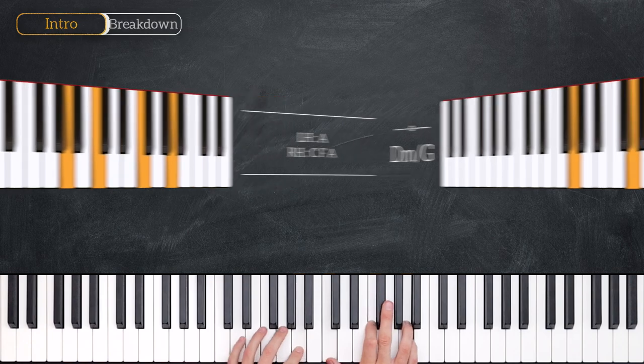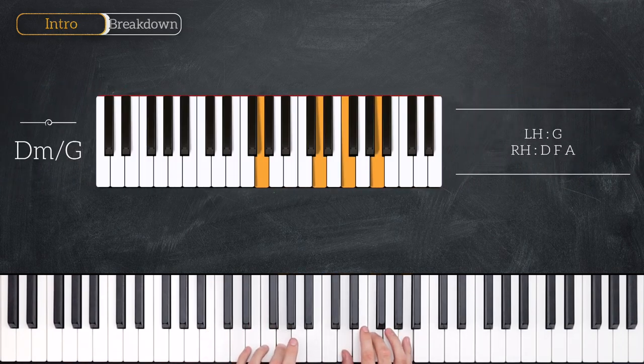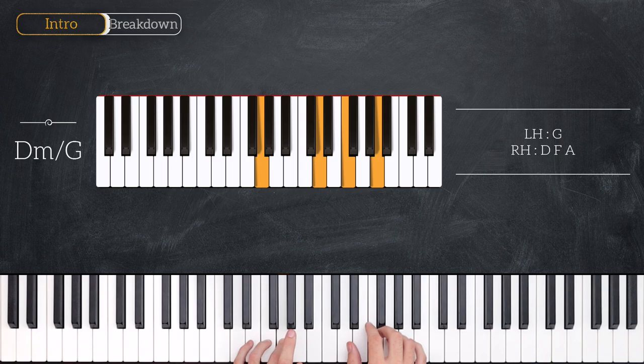The final two chords are D minor over G. So that's G for the left hand and then D, F and A for the right hand.